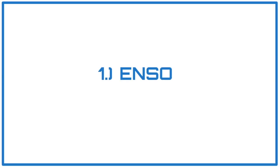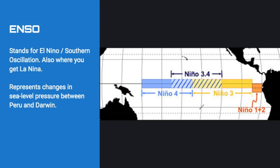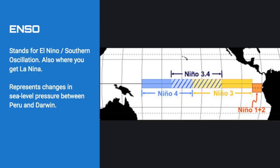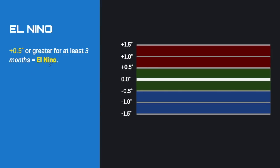Factor number one is ENSO — El Niño Southern Oscillation. We measure the temperature difference between Tahiti and Darwin. If it's warmer than average it can favor El Niño; if it's cooler than average, La Niña. You'll want to watch the western half of that box — if that warms more than the other areas it could favor a Modoki El Niño. El Niño has to be 0.5 degrees or warmer for at least three months.